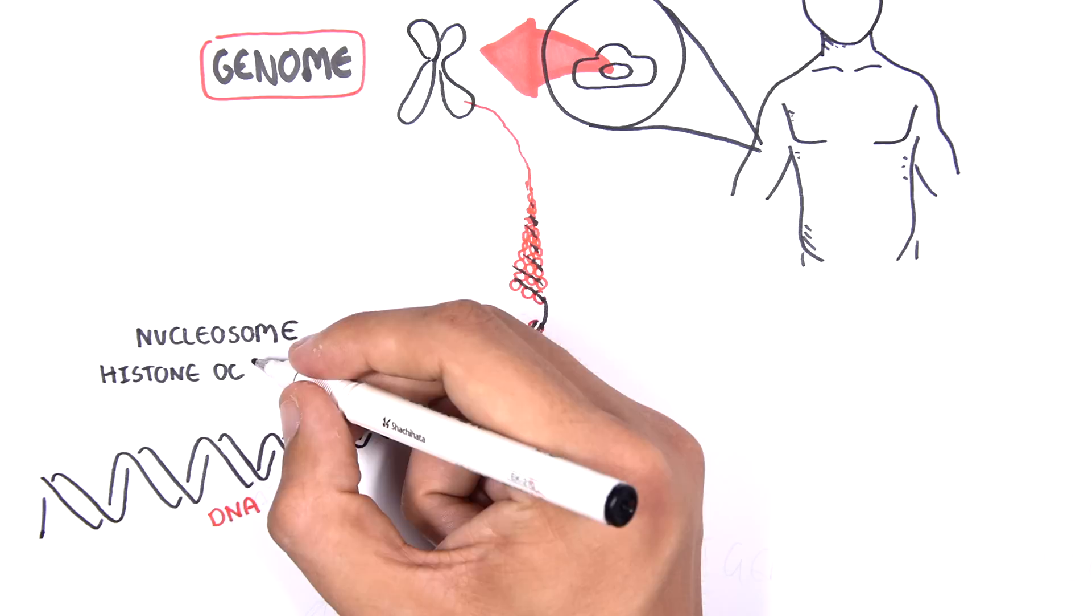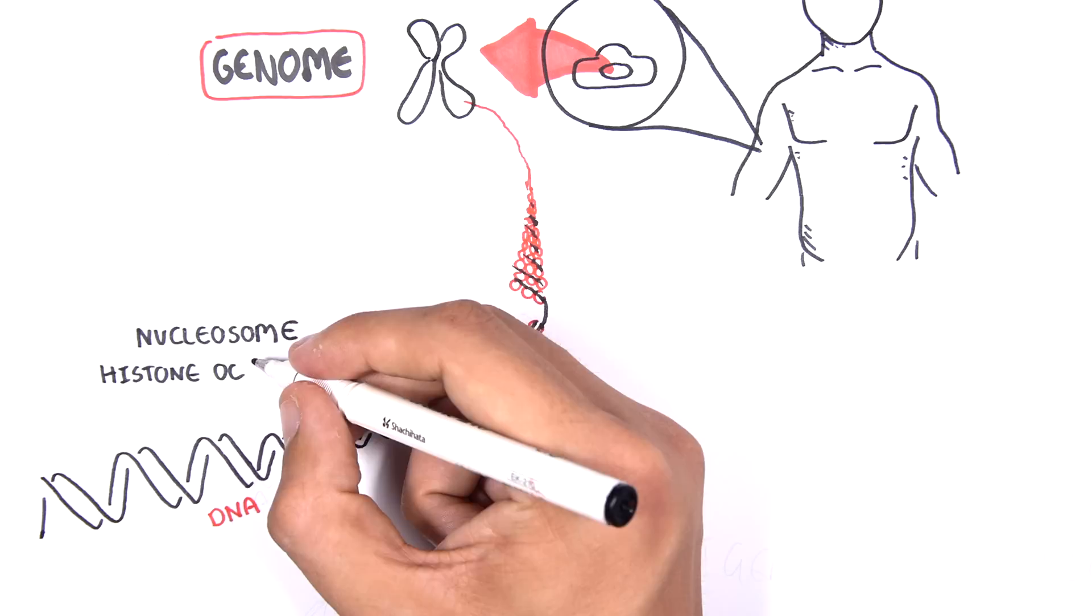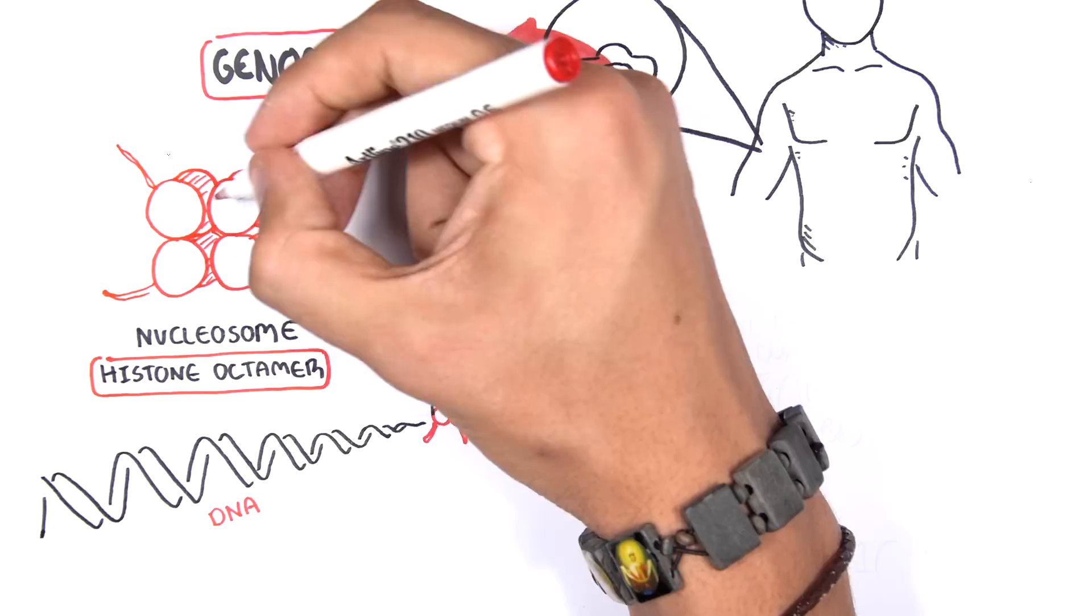The core of one nucleosome is composed of DNA wrapped around a histone octamer that consists of two copies of the major types of histones: H2A, H2B, H3 and H4.